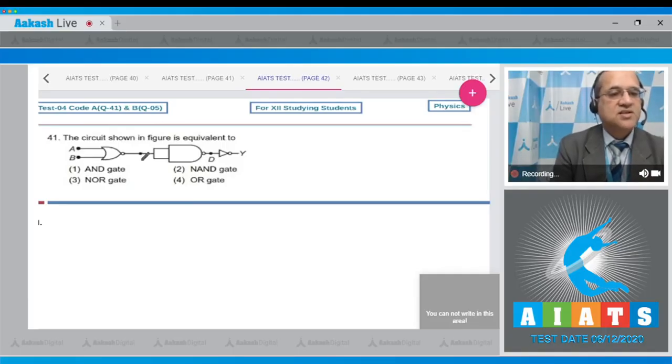Question number 41: The circuit shown in the figure is equivalent to. This is a NOR gate and then a NAND gate which is acting like a NAND gate and then again NOT. So NOR, NOT become OR and then again NOT. So it is again a NOR gate. The correct option is the third option.